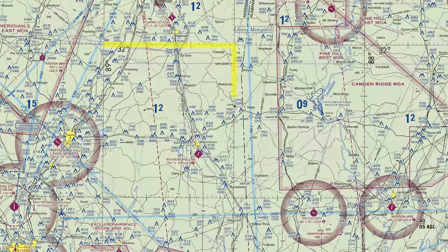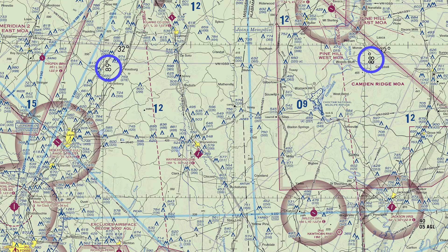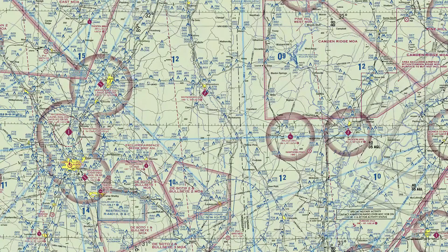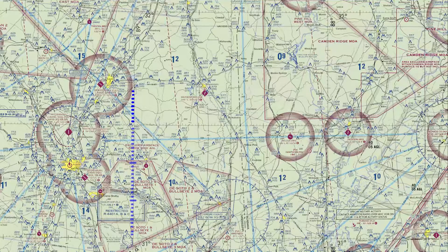The first thing you'll notice are these black dashed lines going up and down and left and right, making a square — those are lines of latitude and longitude. On the left you can see 89, and further to the right is 88 — those are your lines of longitude. You can also see 32 degrees north latitude. Each degree is split up into 60 minutes, so there are 60 tick marks between 31 and 32, and also between 89 and 88.